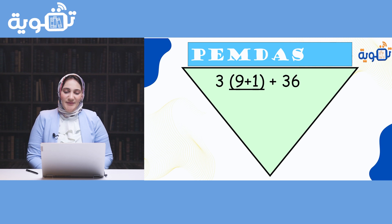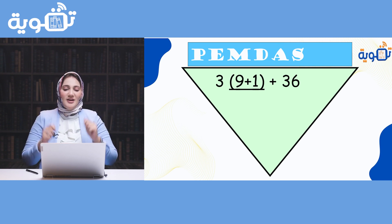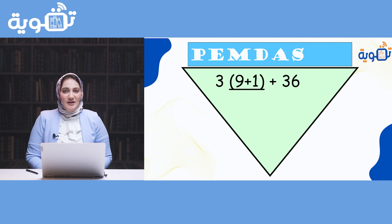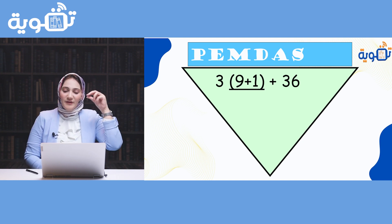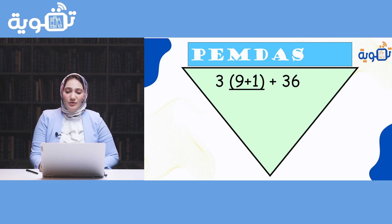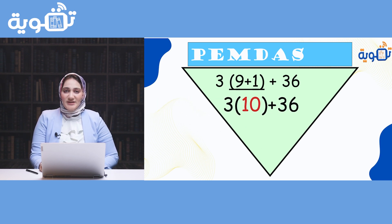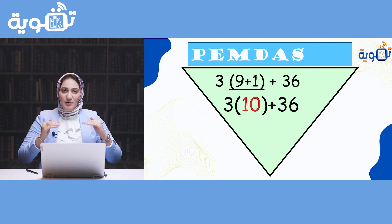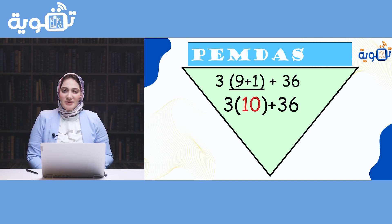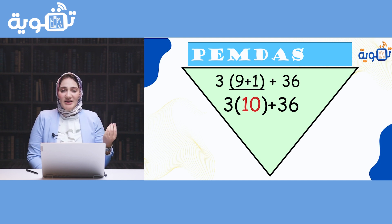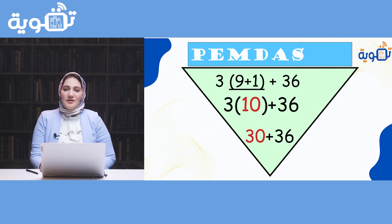The first question: 3 × (9 + 1) + 36. First step: solve inside the brackets. 9 plus 1 equals 10. Rewrite the question — now we have 3 times 10 plus 36. Next, multiplication comes before addition, so 3 times 10 equals 30. Then 30 plus 36 gives a final result of 66.